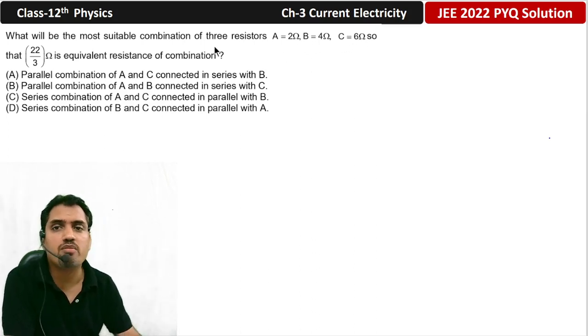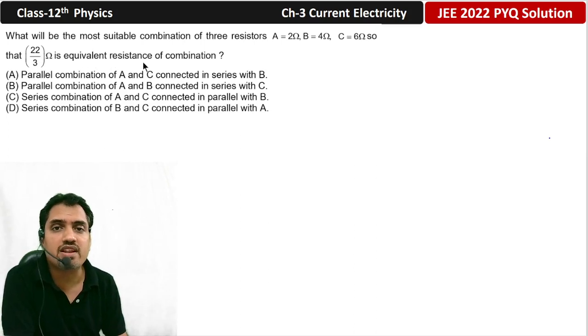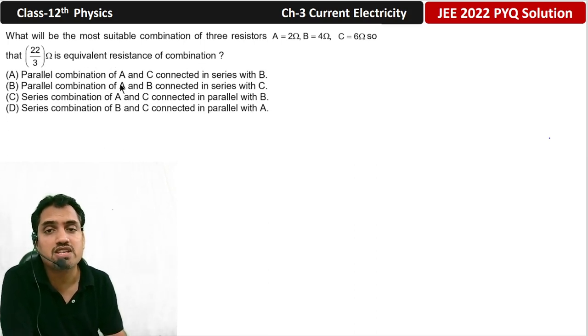Three resistors are in combination 22 by 3 ohm. 22 by 3 ohm is the equivalent resistance of the combination. Which one should be? Parallel combination of A and C connected in series with B. So, let's check one by one.